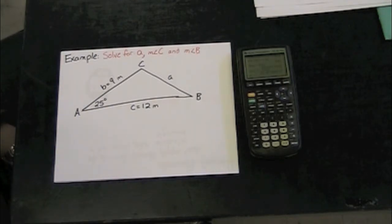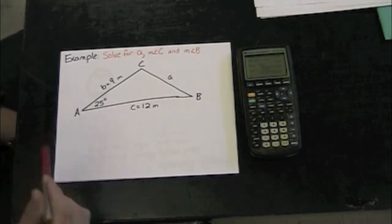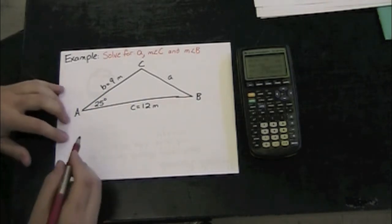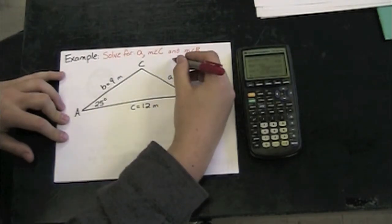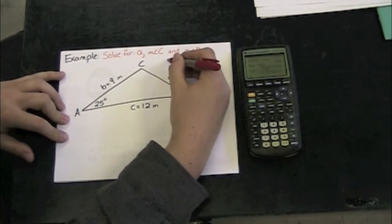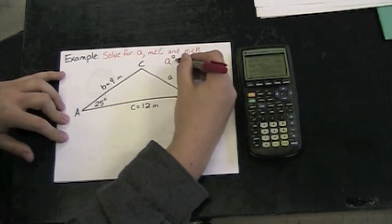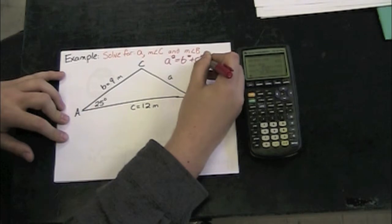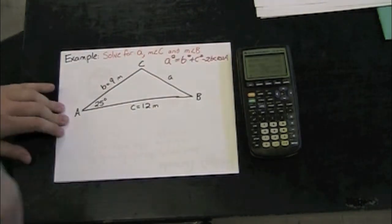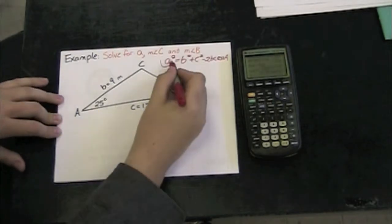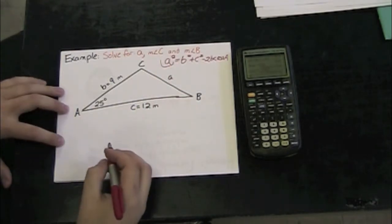I can also use the law of cosines to solve for a side when I have an included angle between the opposite two sides. Let's take a look at how I might do this. If I'm looking for side A, I could probably use the same one I used in my last example: A² = B² + C² - 2BC cosine of angle A. This time, what I don't know is my A².